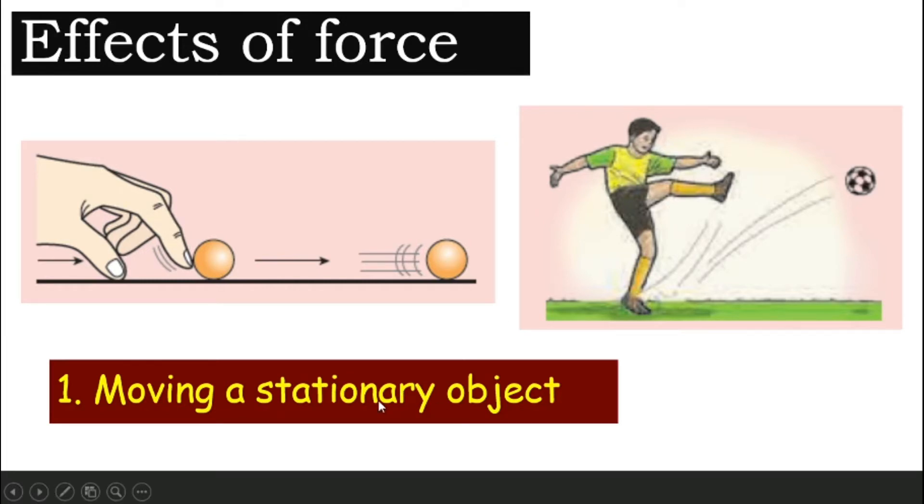What does stationary mean? Stationary means the object is not moving. So, when the object is in a still position, it's in a position that is not moving. If you apply a force, it will start moving. There is one effect of force.